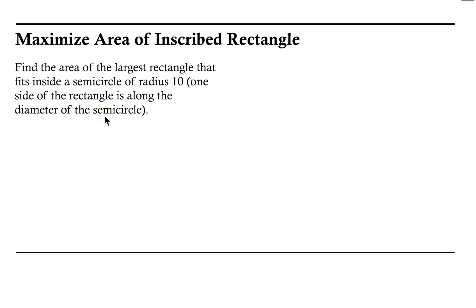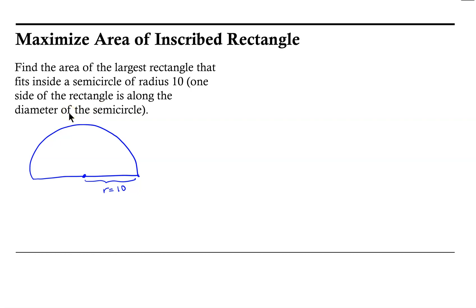So let's start with a diagram. We have a semicircle that looks something like this, and we know that the radius of this semicircle is equal to 10. Now we want the largest rectangle that fits inside the semicircle, and one side of the rectangle needs to be along the diameter. So our rectangle would look something like this, where one side lies along the diameter.